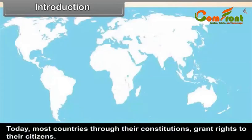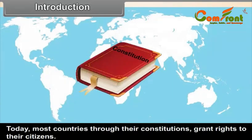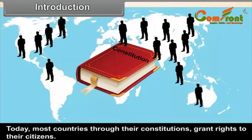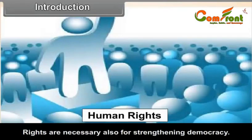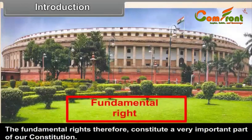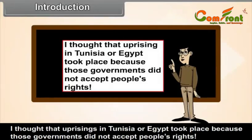Introduction. Today, most countries, through their constitutions, grant rights to their citizens. The aim of such rights is to help in the all-round development of the people. Rights are also necessary for strengthening democracy. The fundamental rights, therefore, constitute a very important part of a constitution. Uprisings in Tunisia or Egypt took place because those governments did not accept people's rights.